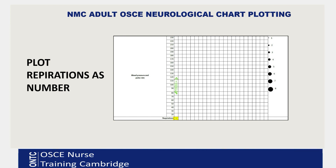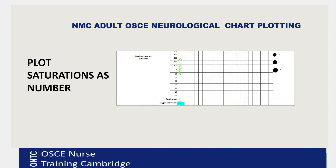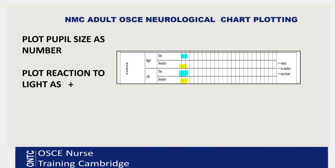For respirations: these are plotted as a number in your neurological observation chart, so add the correct number in the box — for example, 18. For saturations: again, plot as a number. As you can see on screen I've put 97%, so just plot the actual number in percentage for saturations.